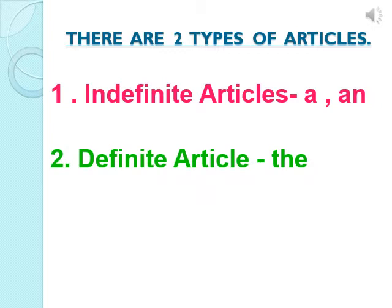Now let's begin our revision session. You all know that there are two types of articles: indefinite articles, which are A and AN, and the definite article, which is THE. Now let's revise the rules of using these articles.